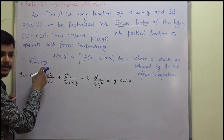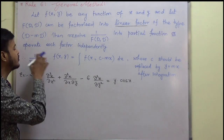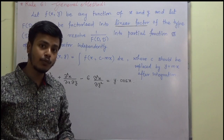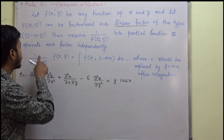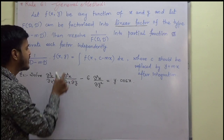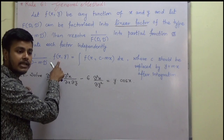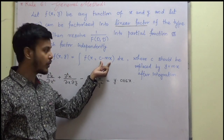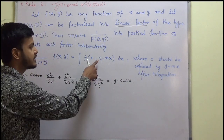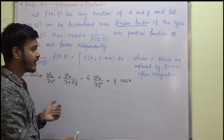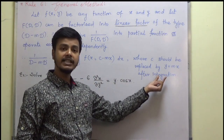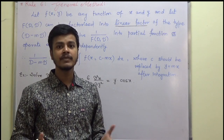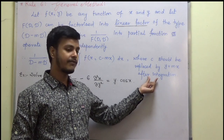So it would be something like 1 upon D minus mD'. You have to express 1 upon F(D, D') into linear factors of this form. Then, 1 upon (D minus mD') acting on f(x, y) means you take the integration of this function where x remains x and y is replaced by c minus mx, dx. Here c is a constant, and after integration you have to resubstitute the value of c, so that in the particular integral there is no constant.